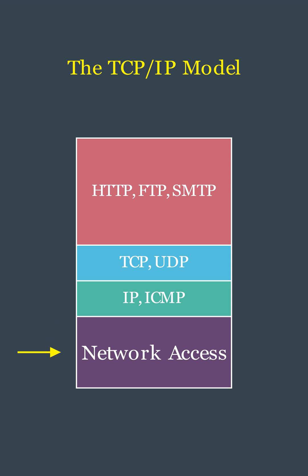Network Interface Layer, also known as the link layer, is the lowest layer. It deals with the physical transmission of data over network hardware, such as Ethernet or Wi-Fi. It includes protocols like ARP to map IP addresses to physical hardware addresses.